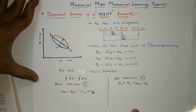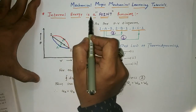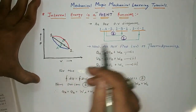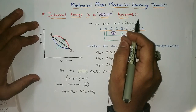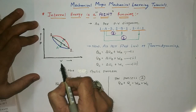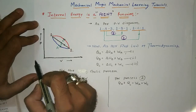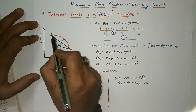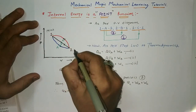Welcome to my YouTube channel Mechanical Magic - Mechanical Learning Tutorials. In this video I am talking about internal energy as a point function. Let's see the PV diagram for the different processes. The x-axis represents V (volume) and the y-axis represents pressure. The system has two states, or two points: point number 1 and point number 2.